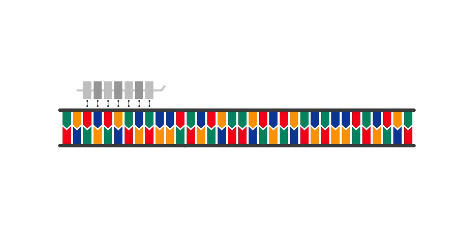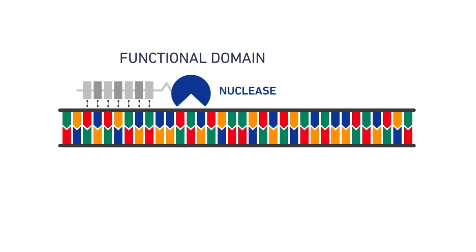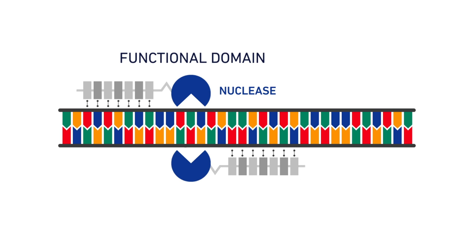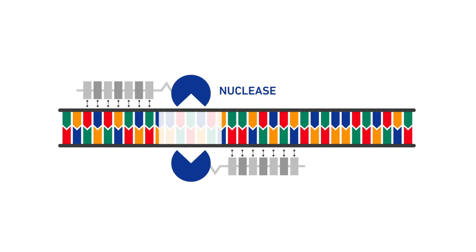To the DNA binding part, we fuse a second part. For example, TALs with nuclease domains are used to generate double-stranded breaks by using two TAL effectors to each cleave a single strand. The space between the two individual TAL DNA binding sites is an important parameter for effective cleavage. Usually, a spacer of about 15 base pairs works well.